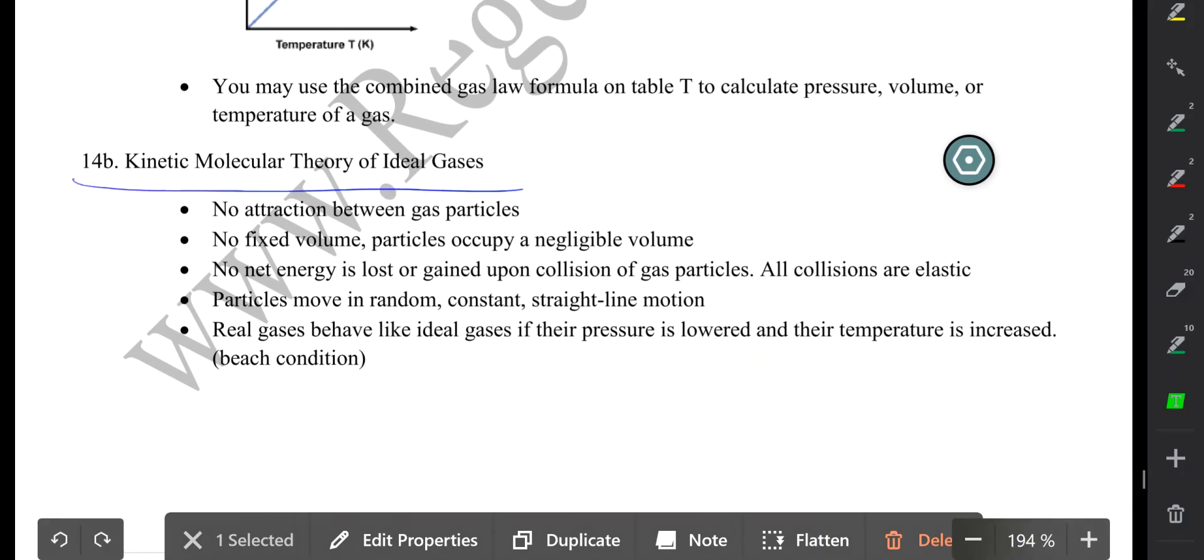Next, the kinetic molecular theory. According to the kinetic molecular theory, ideal gases have no attraction between their particles. It's the three no-no's theory. First, no attraction between gas particles. Second, gas particles occupy a negligible volume. Third, no net energy is lost or gained upon collision between the particles, which means all collisions are elastic.